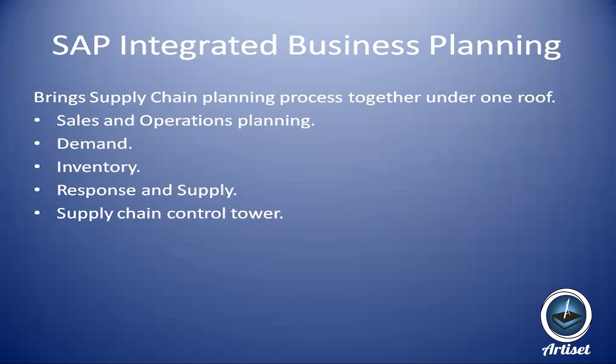SAP Integrated Business Planning brings the supply chain planning process together under one roof. It covers: Sales and Operations Planning, Demand, Inventory, Response and Supply, and Supply Chain Control Tower. Each is an aspect of the overall supply chain planning process. Because it brings everything under one roof, it is called Integrated Business Planning.